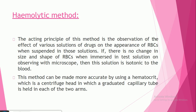The acting principle of the hemolytic method is the observation of the effect of various solutions of drugs on the appearance of red blood cells when suspended in those solutions. If there is no change in the size and shape of the RBC when it is immersed in the test solution and observed with a microscope, then the solution is said to be isotonic with the blood.